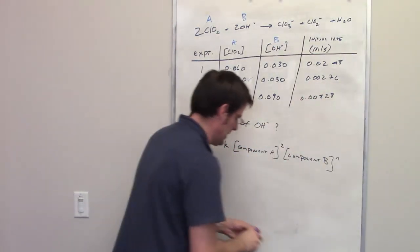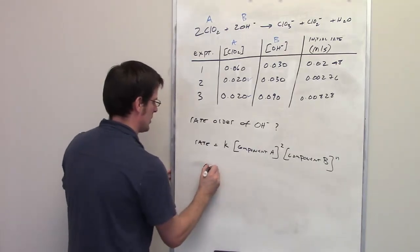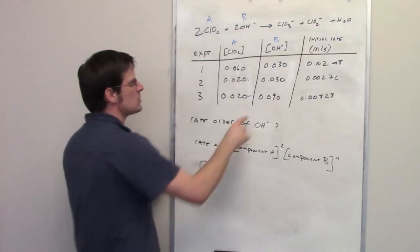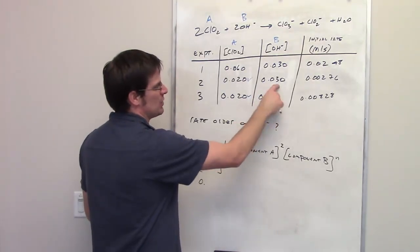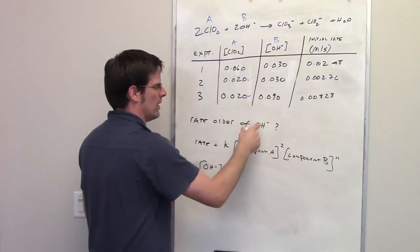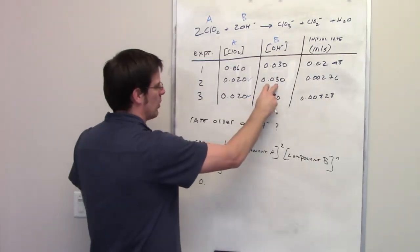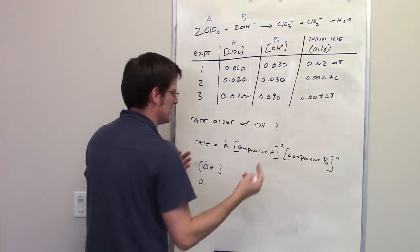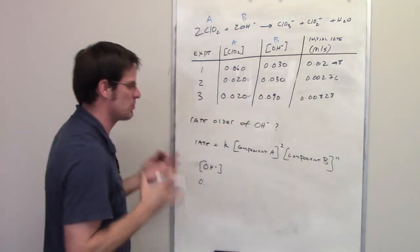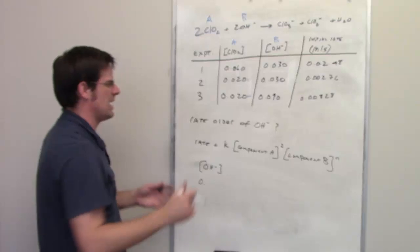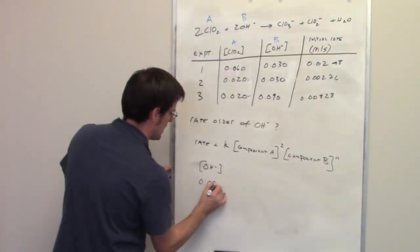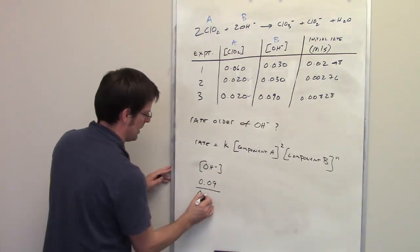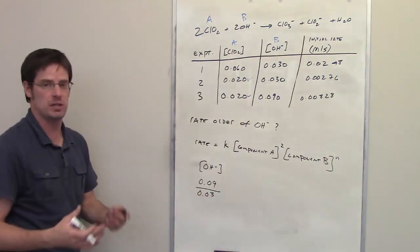The concentration of hydroxide in experiment 1 was 0.03. By the way, I always want to divide whichever of these two is larger by the smaller one. So I don't have to necessarily go in the order of experiment 2 and then experiment 3. I do experiment 3 divided by experiment 2. I want to take the bigger one and divide it by the smaller one. So the bigger one is 0.09. In experiment 3, the concentration of hydroxide was 0.09. I can divide it by 0.03, which was the concentration in experiment 2.